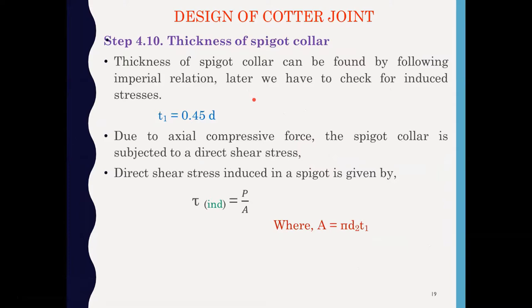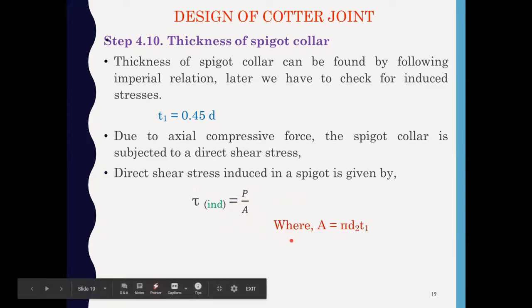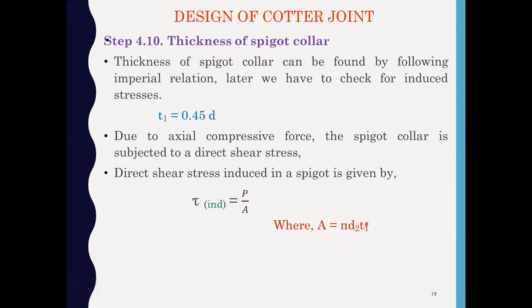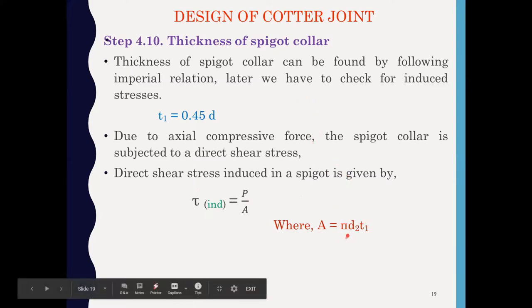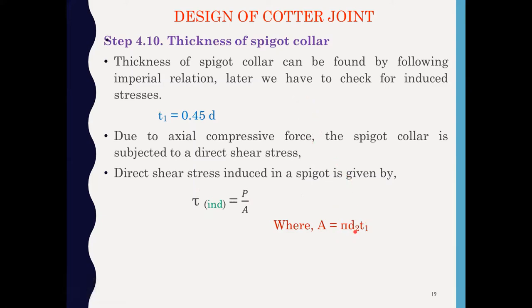Now we find the induced stresses in the spigot collar. The empirical formula for the spigot collar thickness is T1 = 0.45 × D. Due to the axial compressive force, the spigot collar is subjected to direct shear stress, given by tau = P / A, where A = π × D2 × T1, with T1 being the thickness of the spigot collar and D2 the outer diameter of the spigot.